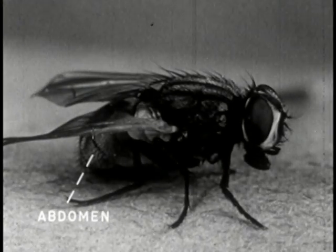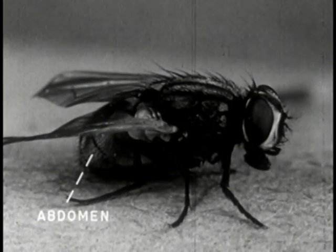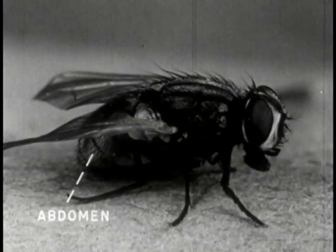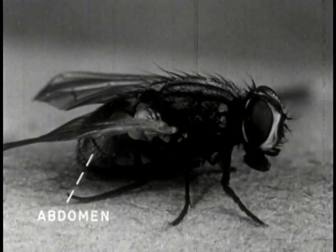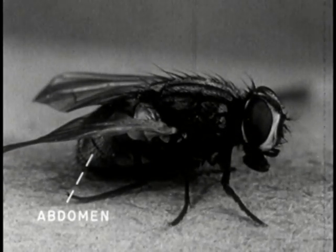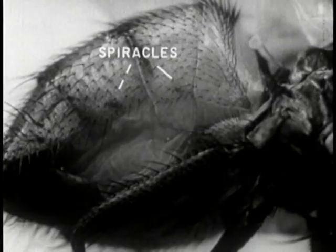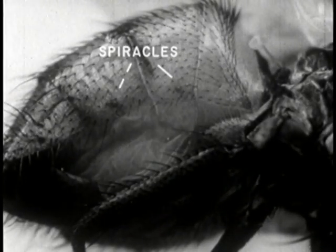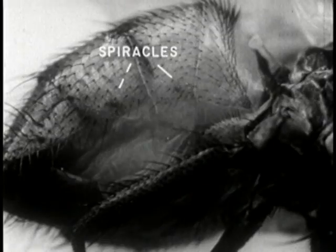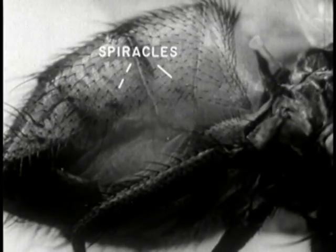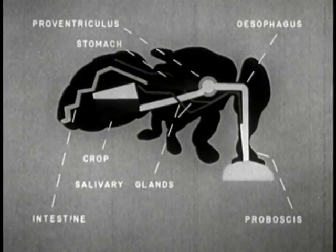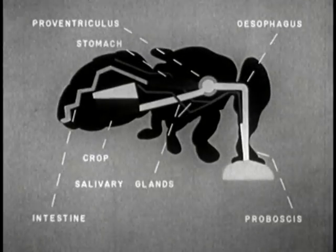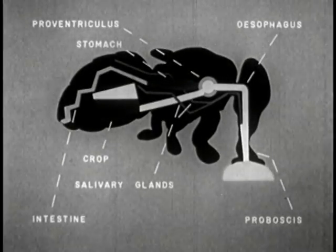The housefly's respiratory and digestive systems extend through the thorax and the abdomen. The abdomen also encloses the reproductive system. Breathing is accomplished through holes or pores called spiracles in the body wall. The feeding and digestive systems of the fly add still another manner in which the fly spreads disease.